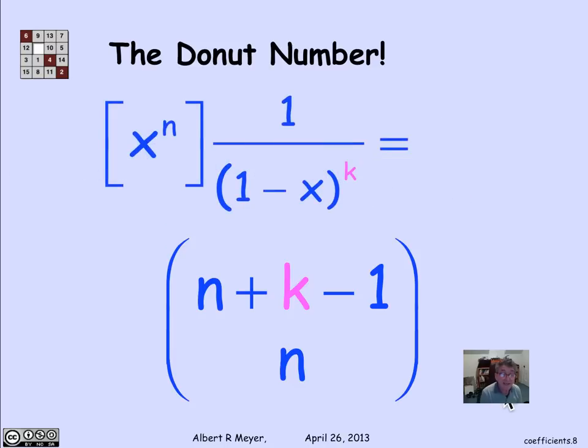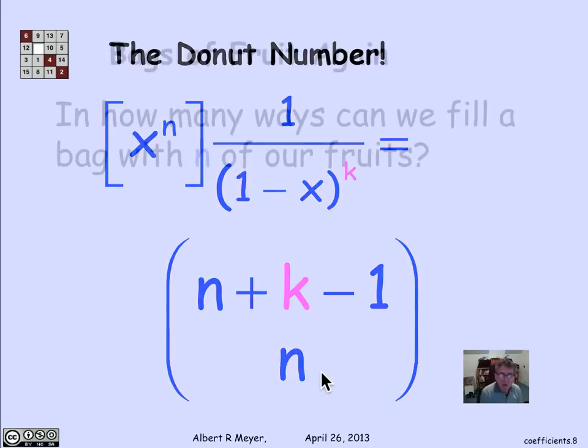And restating it in our coefficient notation, the coefficient of x to the n in the generating function 1 over (1 minus x) to the k power is (n plus k minus 1) choose n.